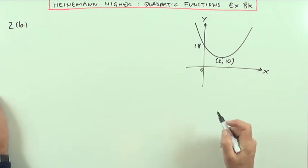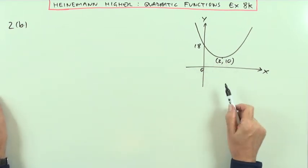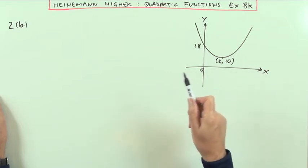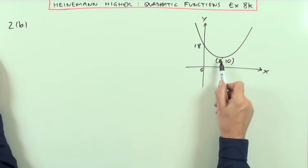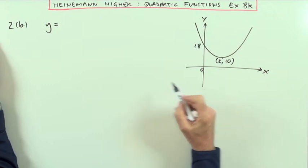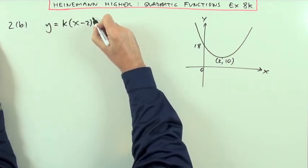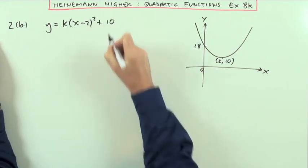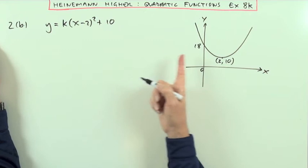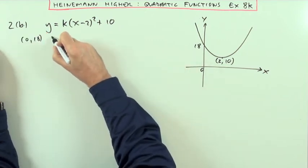Now part B. In B, I can't use the factorised form because it doesn't have any real roots — there are no zeros to the graph. So I'll have to use the completed square form, because I know the turning point is at (negative 2, 10). So that should be in the form K times (X minus 2) squared plus 10. To find K, I've got the independent point (0, 18), so I'll put that in.